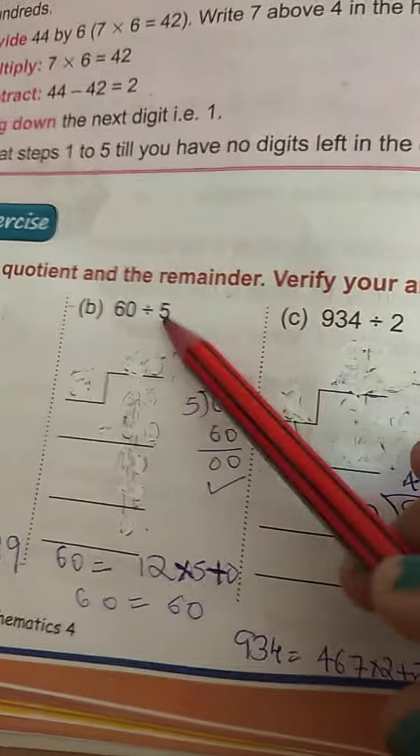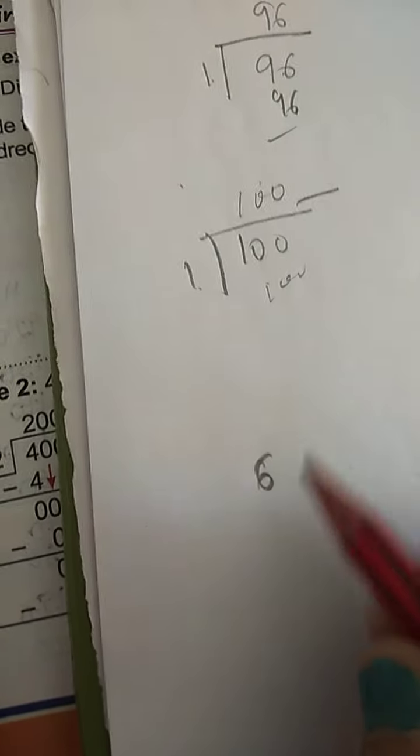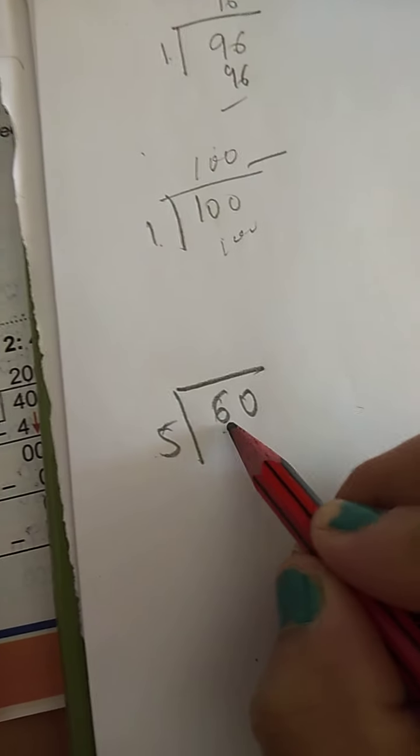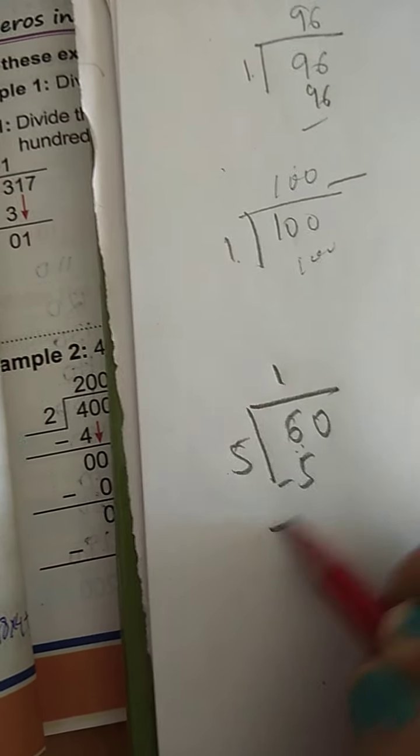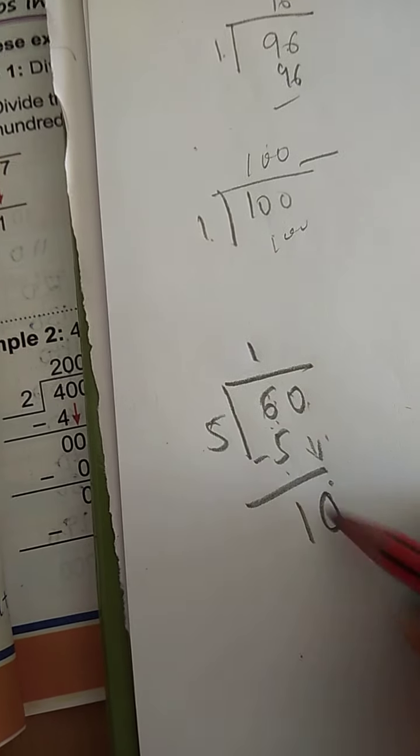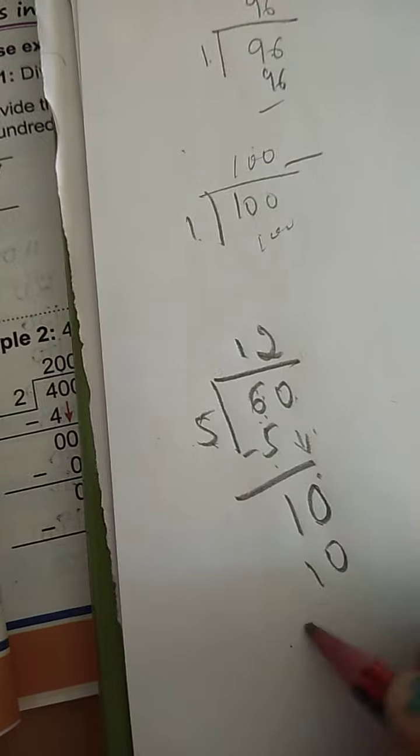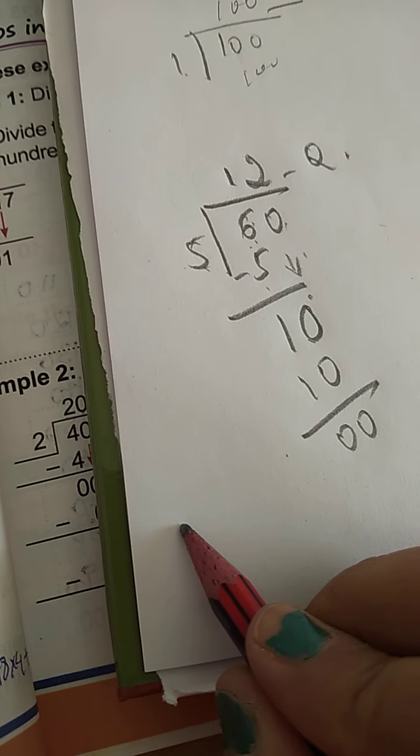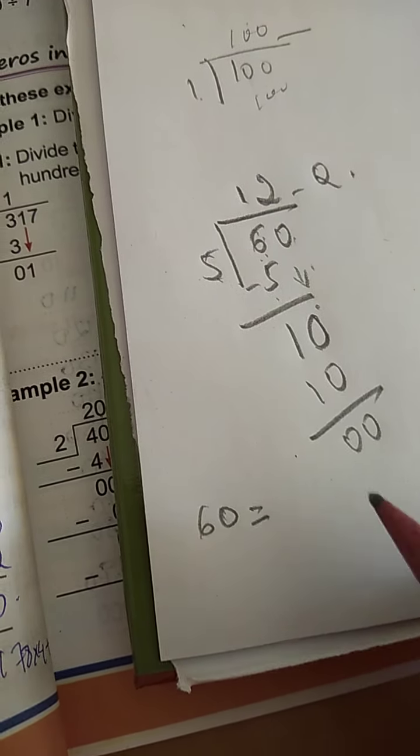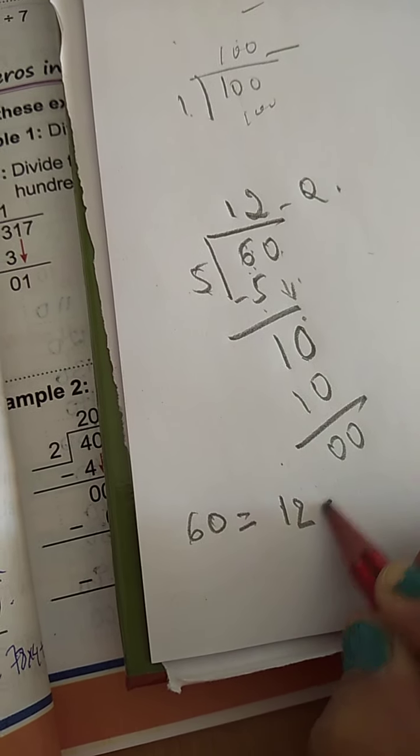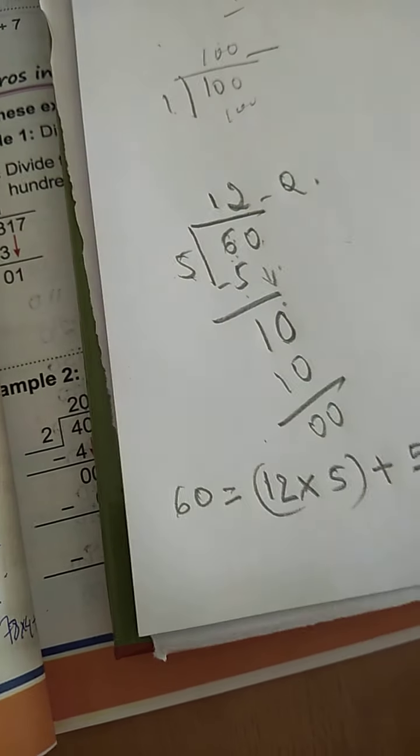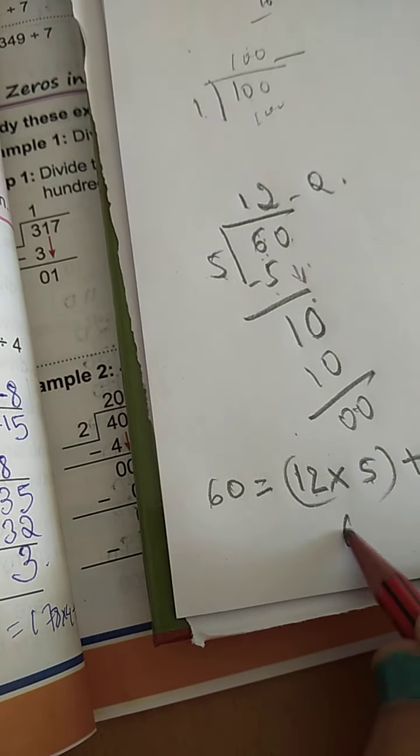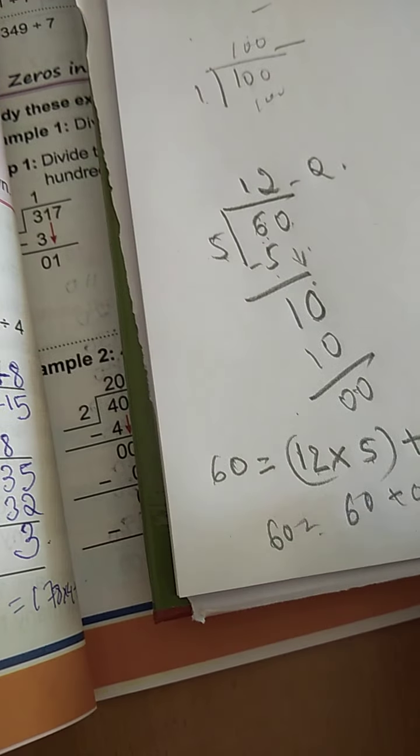So let us take one more example from your exercise. 60 divided by 5. So 6 divided by 5, 1 times 5. Minus 1. You have to bring down. 10 divided by 5, 2 times 10. 0. So this will be quotient. Dividend is equal to quotient multiplied by divisor plus remainder. Remainder is equal to 0. So 12 is 60. 60 is equal to 60.